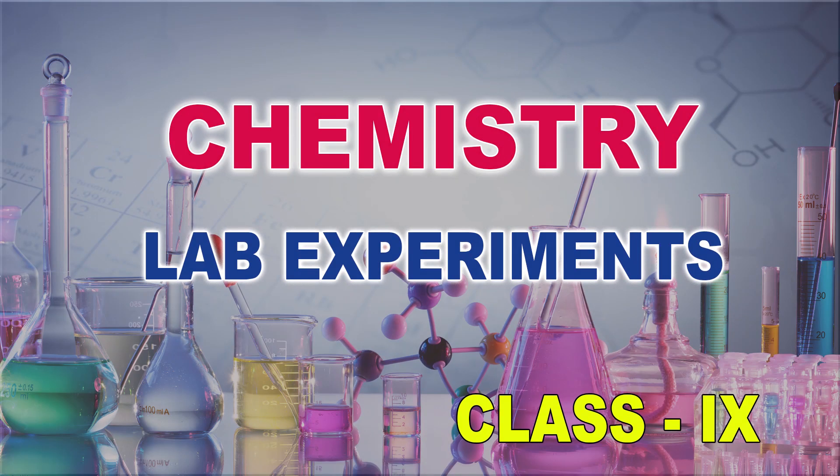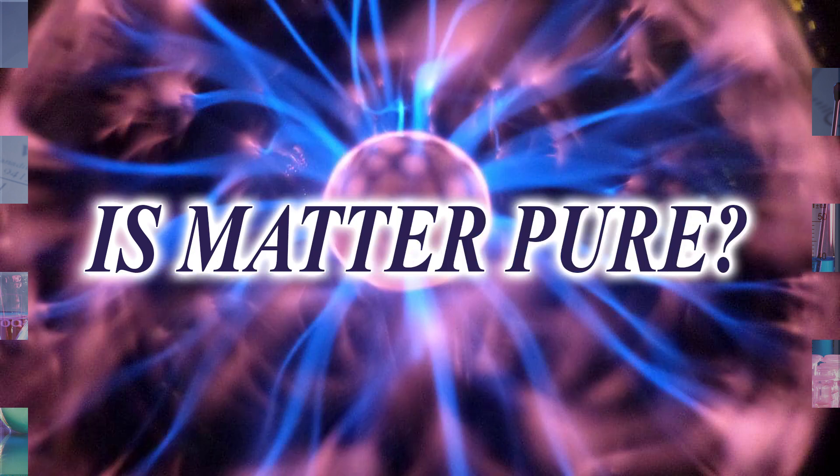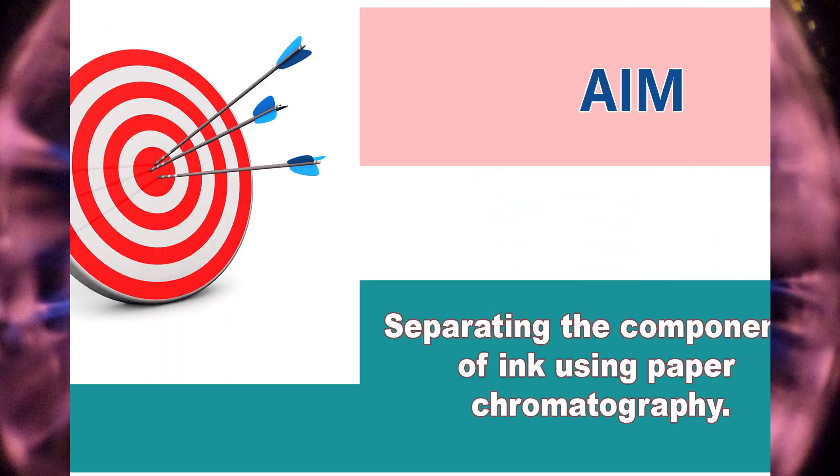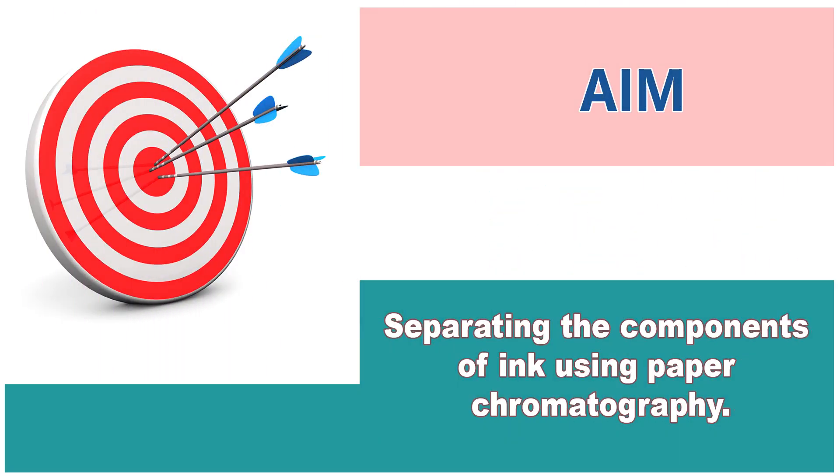Hi children, now it is time to do a chemistry lab experiment. The lesson is 'Is Matter Pure?' This experiment belongs to ninth standard. The aim of this experiment is separating the components of ink using paper chromatography.